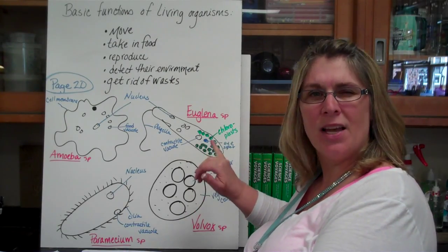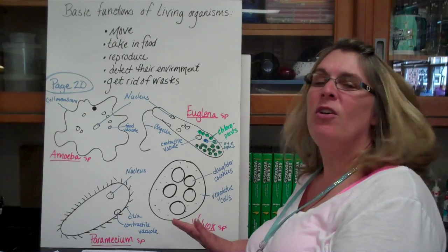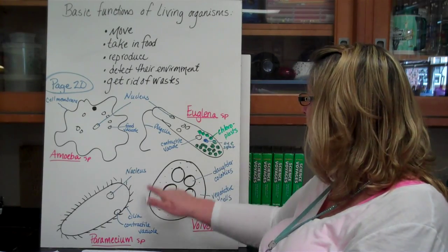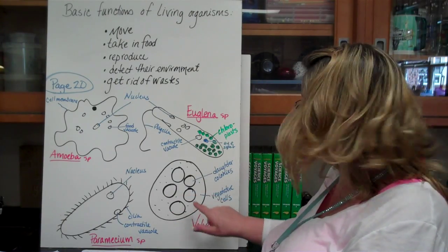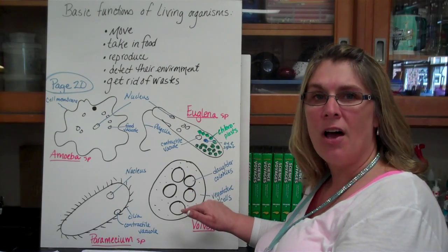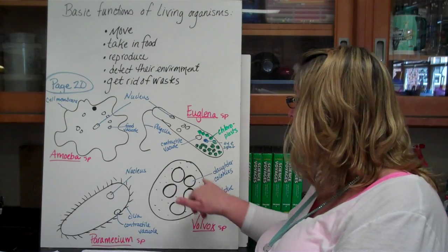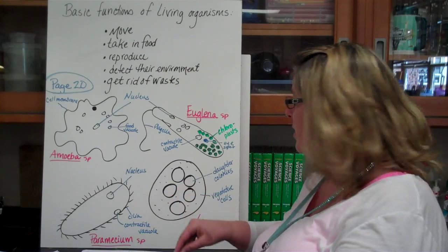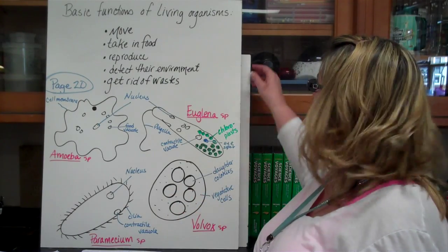It also has an eye spot. That's kind of unique for these. And then volvox is really unique because it's a colony of cells. And you have these smaller colonies within it that are daughter cells. And it has vegetative cells. That means they're littler ones getting ready to start. And it's also covered with cilia.